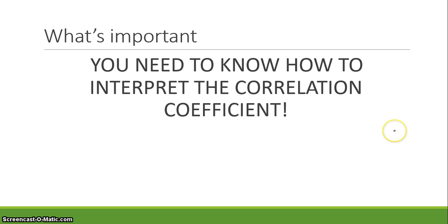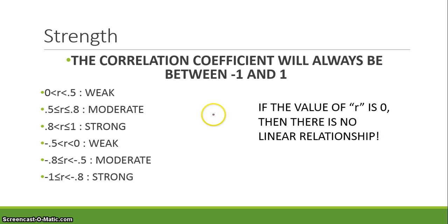What is important is that you need to know how to interpret the correlation coefficient — that is what AP Statistics cares about. The correlation coefficient will always be between negative 1 and 1, and within that range there are certain divisions that show us how strong the relationship between two variables is.